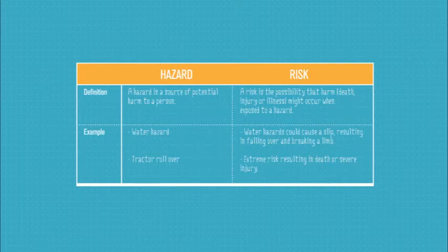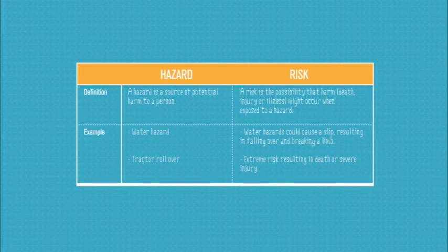If you're looking at the tractor rollover, the risk in an extreme case is death, or severe damage resulting in broken limbs or other parts of the body. It's important that you also add the example to get the full three marks.